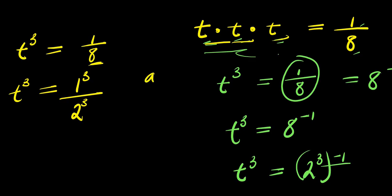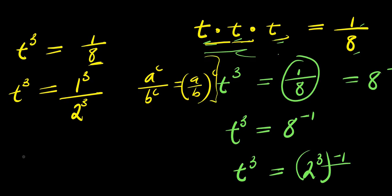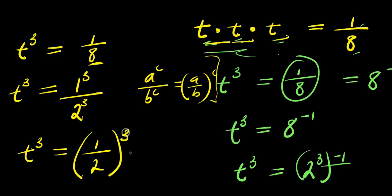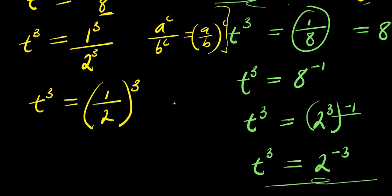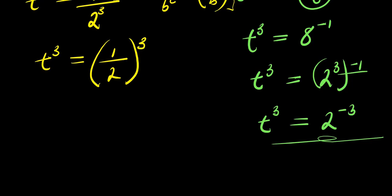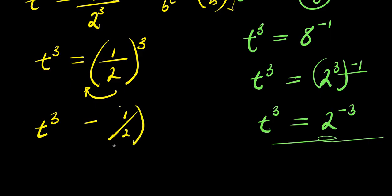So right now, remember if you have a to the power c divided by b to the power c, this equals a divided by b, all to the power of c. By making use of this identity, I can have t to the power 3 equals 1 divided by 2, all to the power of 3. So I can move this over here: t to the power 3 minus 1 divided by 2, all to the power 3, equals 0.